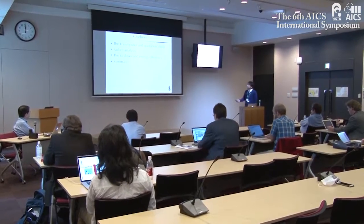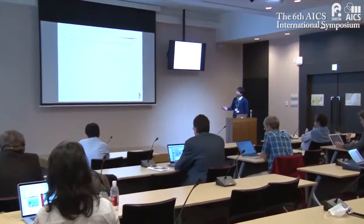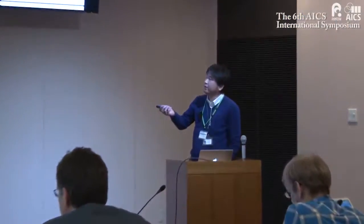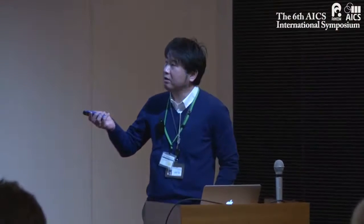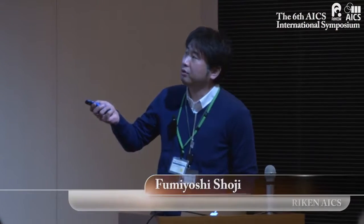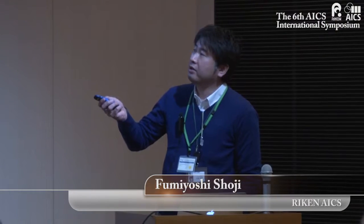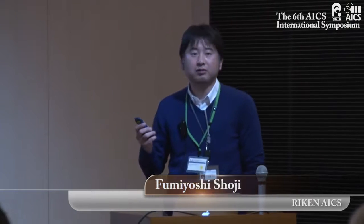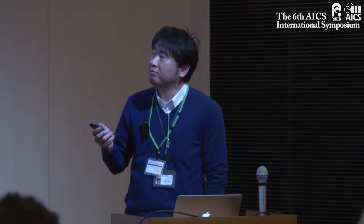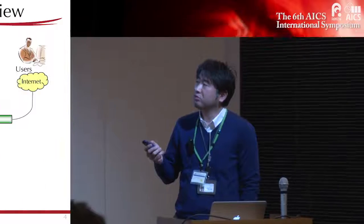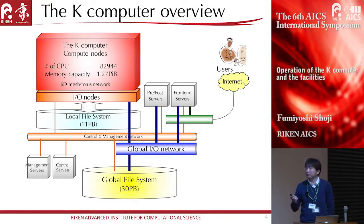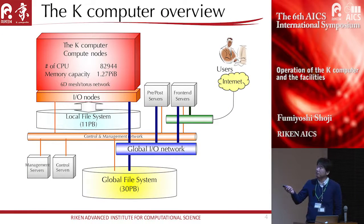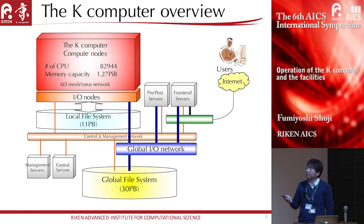Here is the outline of my talk. This is the block diagram of the K-computer. The K-computer has about 82,000 CPUs and 1.27 petabytes total memory capacity. Each node is connected by a six-dimensional mesh torus network.